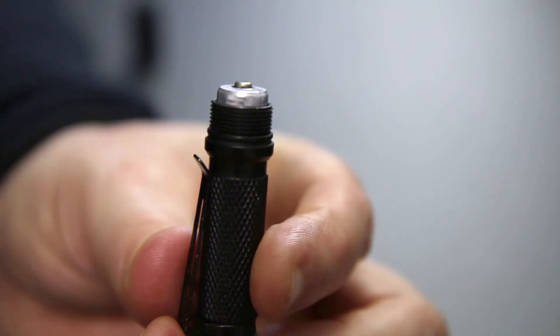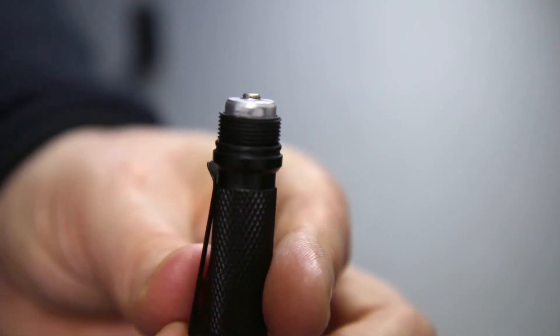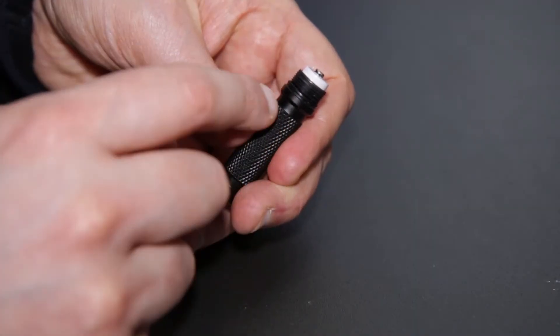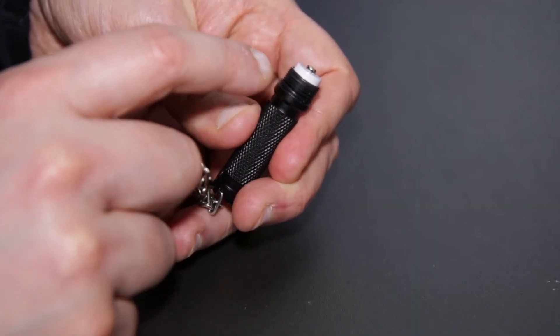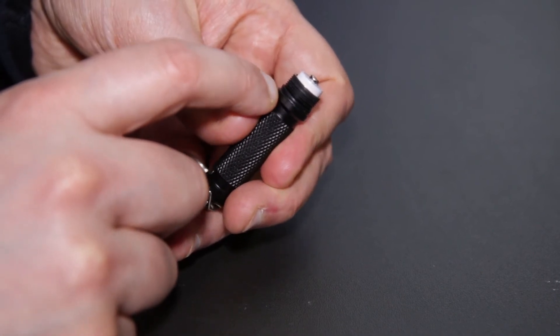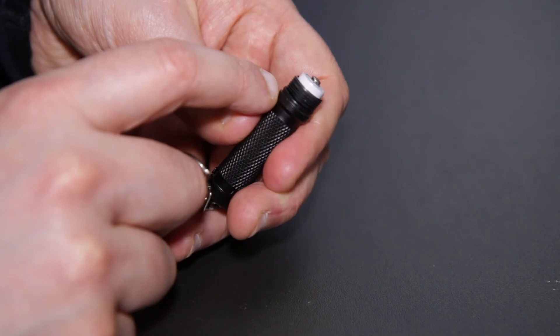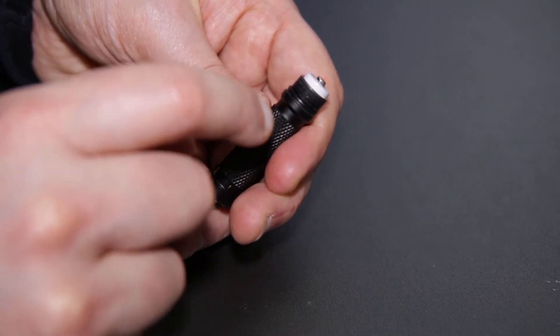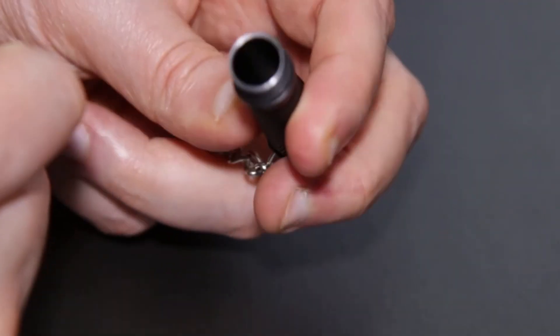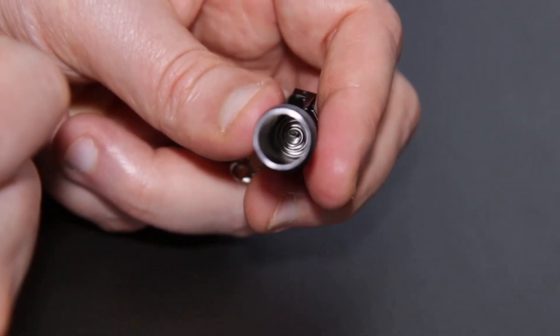And the threading, like I said the build quality is really nice. You've got really nicely machined throughout and the threads are really good. You've got an o-ring here to add to the waterproofing. And the batteries go positive side up and you've got a spring at the bottom there.